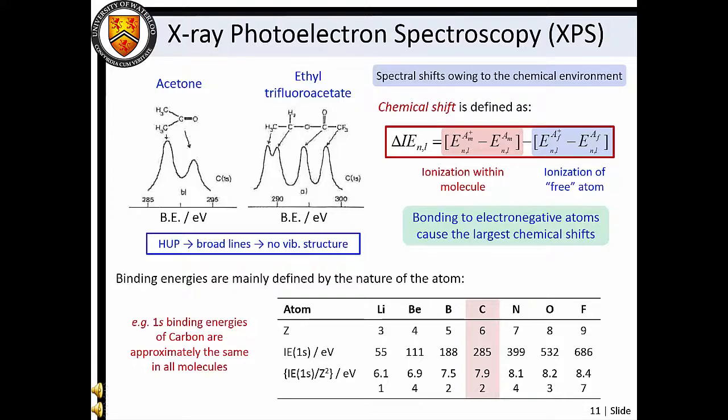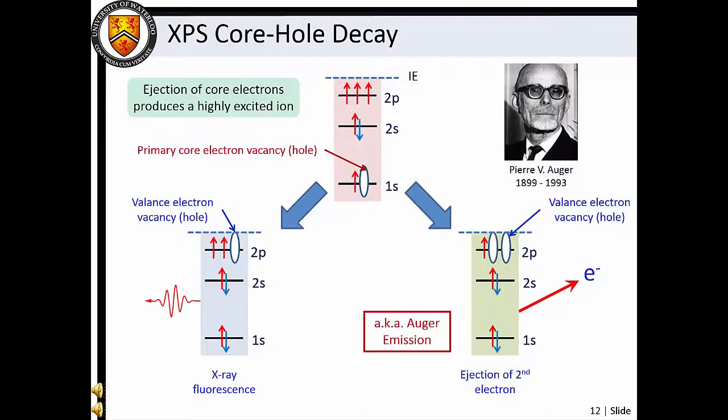Note that for x-ray photoelectron spectroscopy, broad spectral features without vibrational structure are observed. This is a result of the relative instability of core electron holes and the uncertainty relation between energy and time. Core hole decay typically occurs by relaxation of a valence electron to fill the vacancy in the core atomic orbital. This relaxation is accompanied by emission of an x-ray photon that is characteristic of the atomic energy level structure. In some cases, core hole decay produces secondary photoelectrons through the process of Auger emission. Kinetic energies of Auger electrons are also unique to each element and are also regularly used to characterize chemical samples.